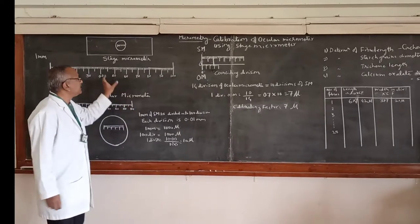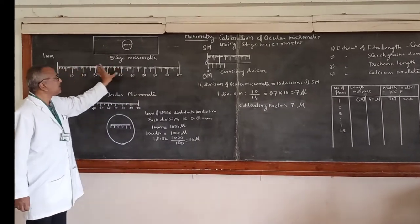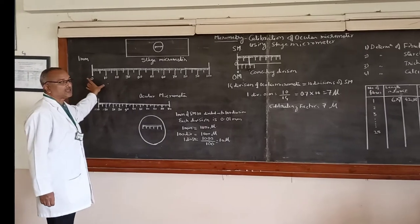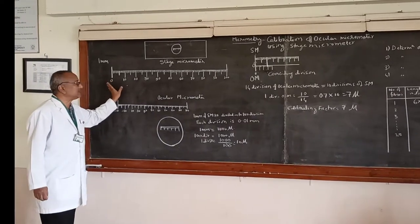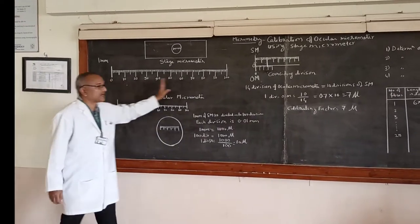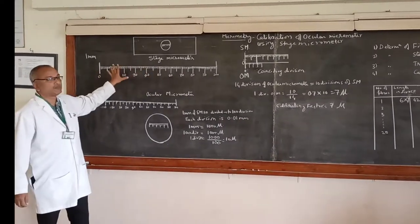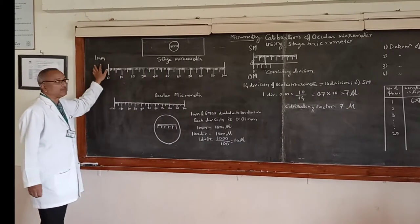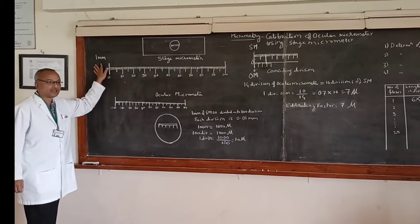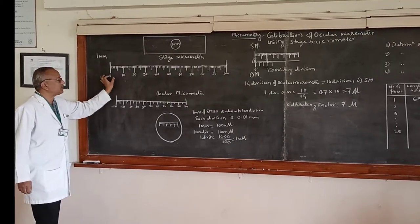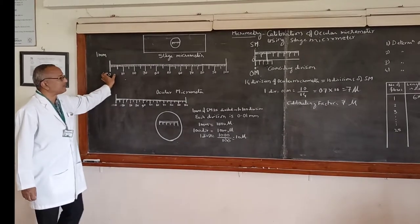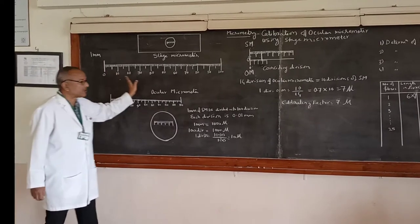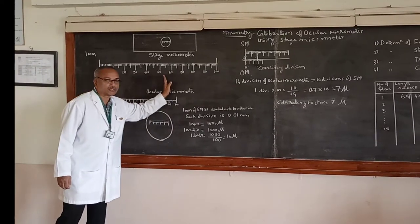The stage micrometer is graduated with 0 to 100 divisions, and it measures about 1 mm in total. Each unit will be about 0.01 mm, which works out to around 10 microns per division.